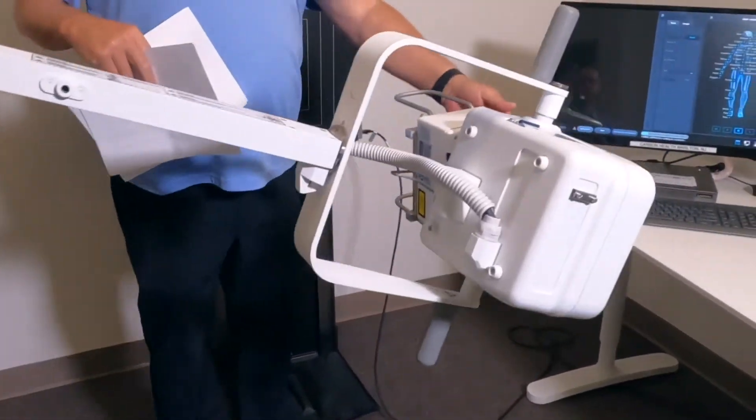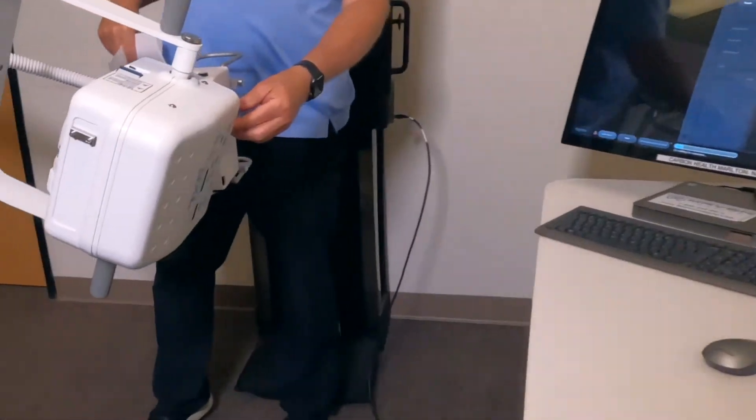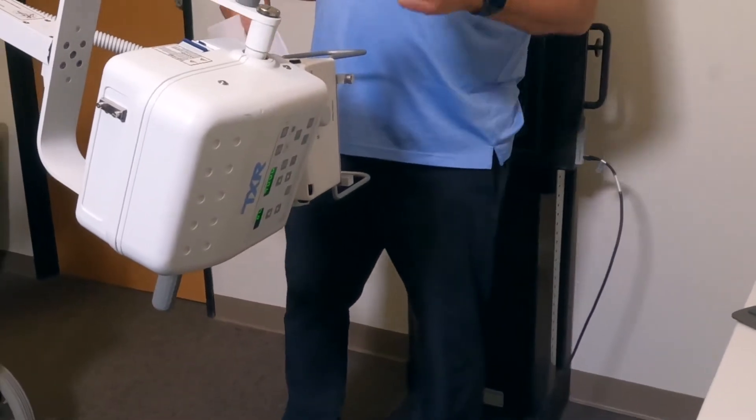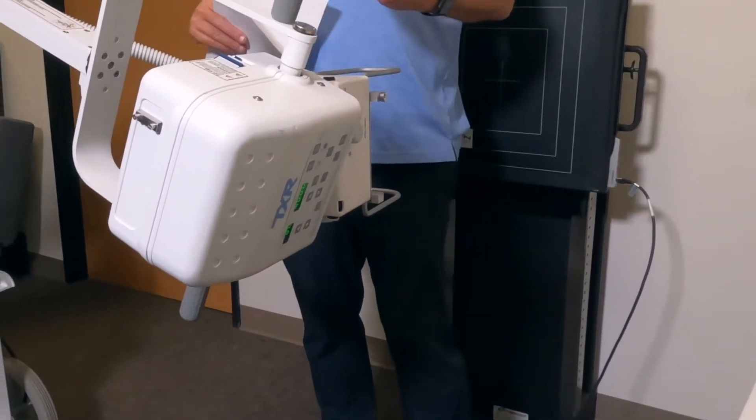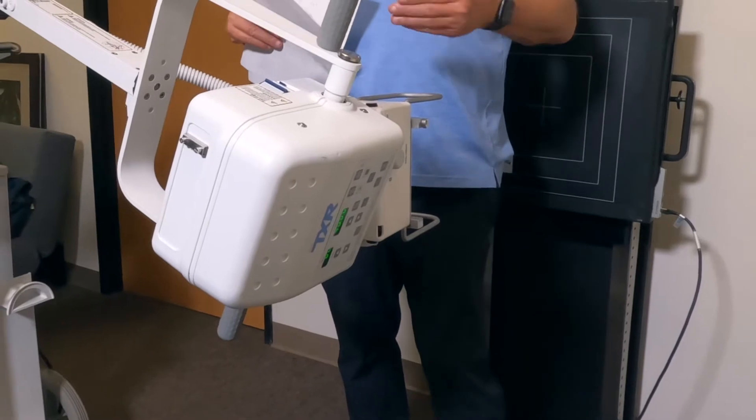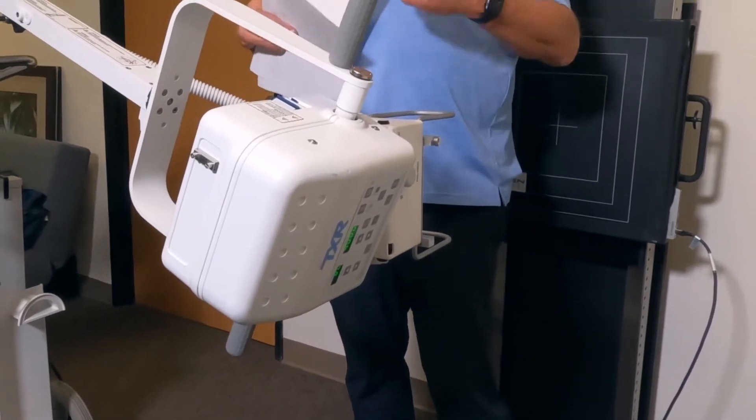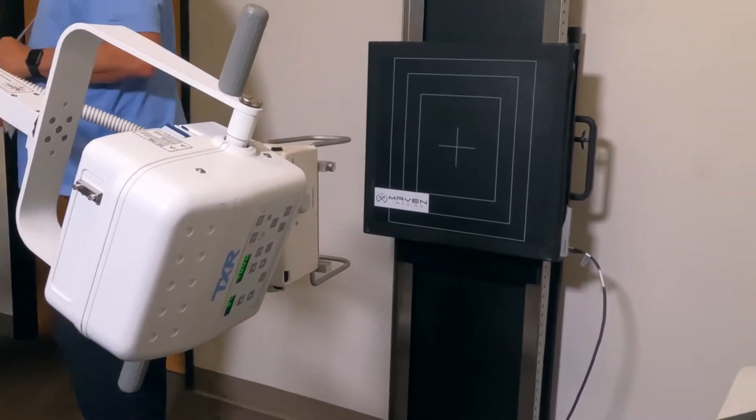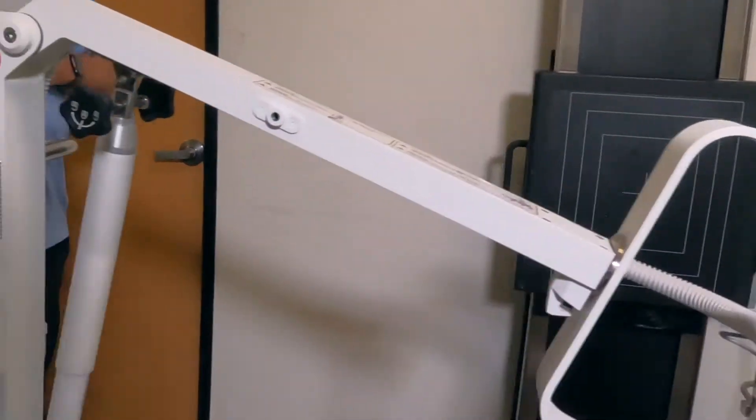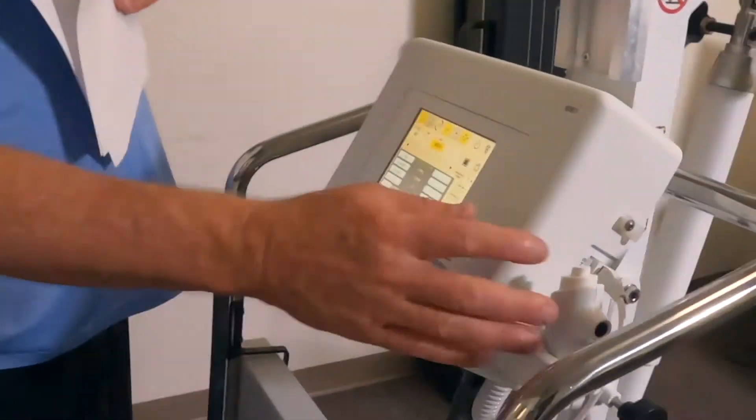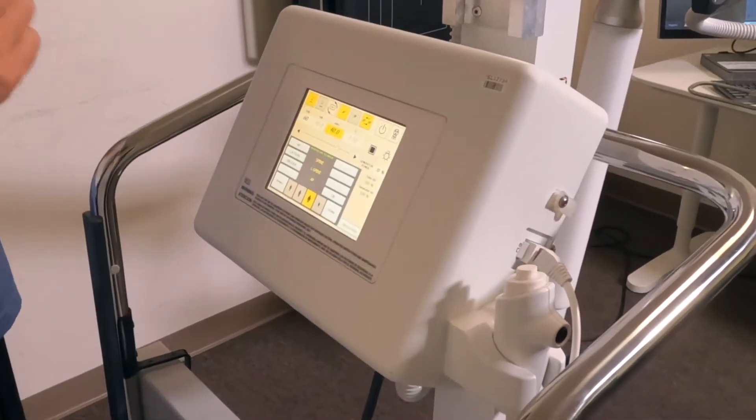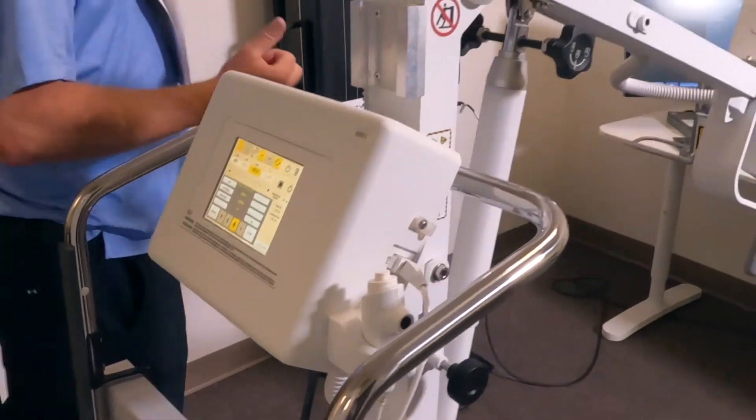One more thing—we come over to the collimators on the side, the little dials. What we do is close the collimator settings so that there is no light coming through the x-ray. Then we come back over here to the trigger switch, stand behind the lead shield, and take one shot. One shot will warm the x-ray up.